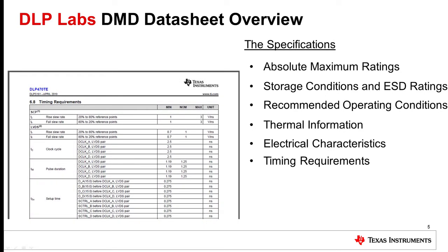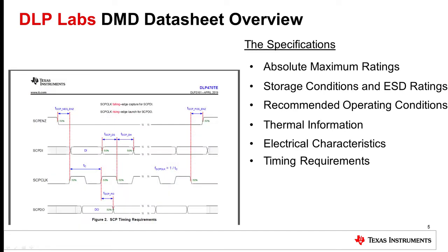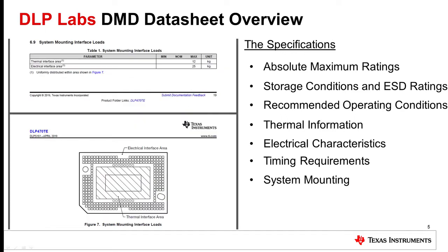The next portion shows the timing requirements that must be met for particular signals on particular interfaces, given by a table as well as timing diagrams, which show the relationship of signal transitions relative to one another. Proper timing will be ensured by using the required TI controllers and other devices that comprise the DLP chipset described in sections 3 and 7, along with following the PCB design requirements. The system mounting and interface load section shows the maximum mounting force that may be used to mount the device to the electronics; stresses beyond this could cause physical damage to the device.